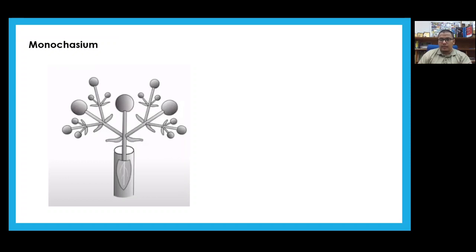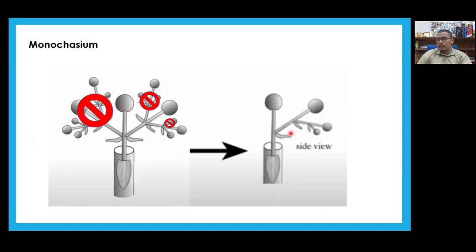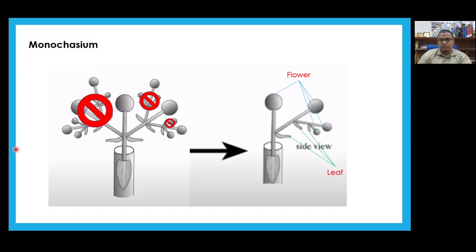There is a variation called a monochasium. 'Mono' means one. In a monochasium, the same branching occurs but only on one side. At each node there is one axis ending in a flower, one leaf, and then one axis with one flower — and this continues. It's a branching pattern that happens on just one side.